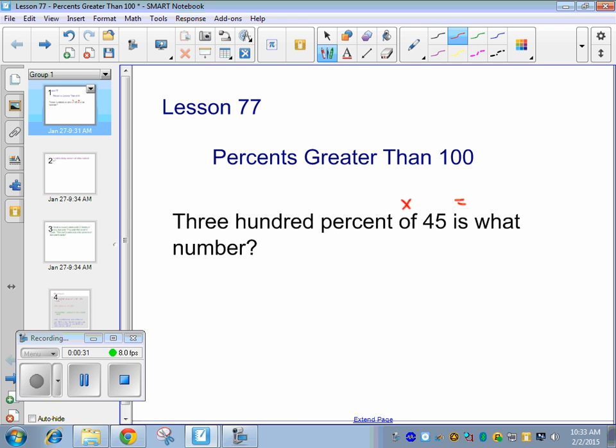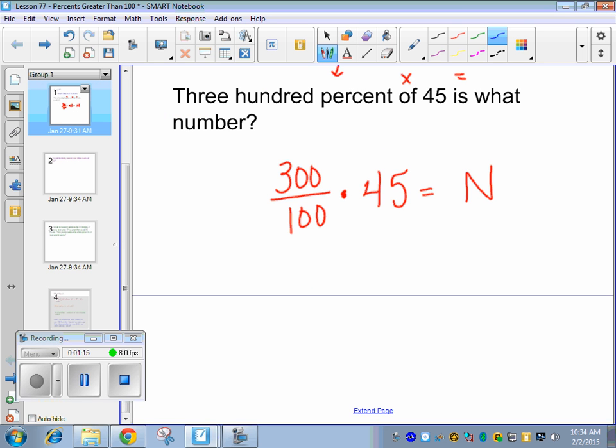The only thing I want you guys to do differently, because Carlson always writes 300 with the percent sign, I want you guys to do 300 over 100. That's how we're going to do the percents, is we're always going to put it over 100. So ours is going to say 300% of, so times, 45 is what number?